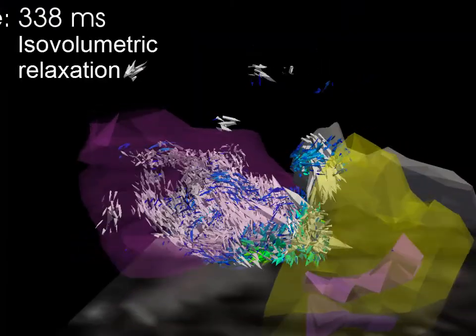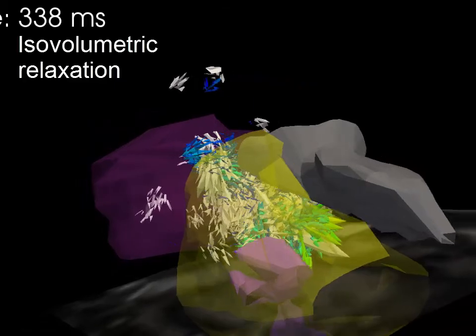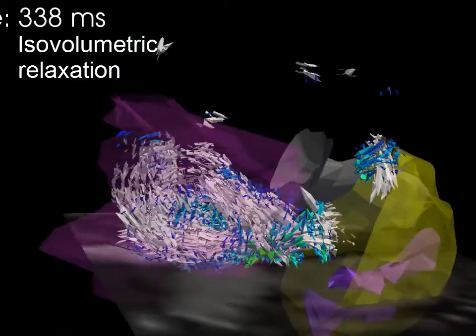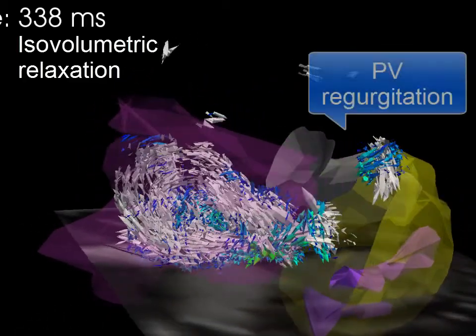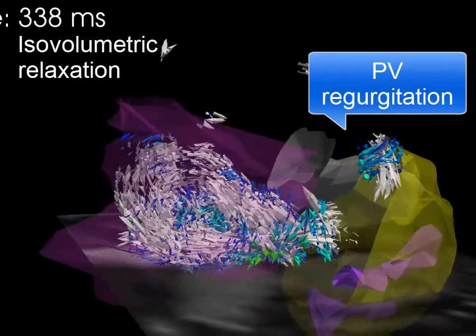At the end of systole, during isovolumetric relaxation, we see evidence of pulmonary valve regurgitation, but little other flow in the ventricle.